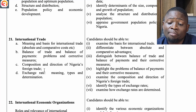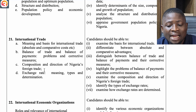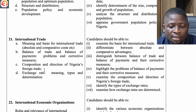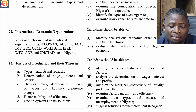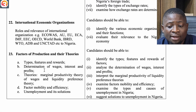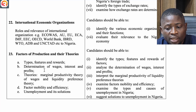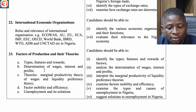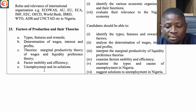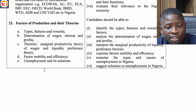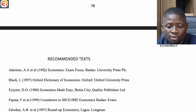The twenty-first topic is International Trade — meaning and basis for international trade; absolute and comparative cost advantage; balance of trade and balance of payments: problems and corrective measures; composition and direction of Nigerian foreign trade; exchange rate: meaning, types and determination; international economic organizations and their roles: ECOWAS, AU, EU, ECA, IMF, EEC, OECD, World Bank/IBRD, WTO, ADB and UNCTAD, and their relevance to Nigeria. Topic 22 covers Factors of Production — types, features and rewards; determination of wages, interest and profits; marginal productivity theory of wages; liquidity preference theory; factor mobility and efficiency; and unemployment and its solutions.